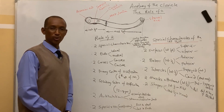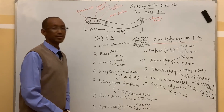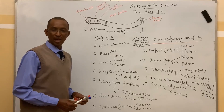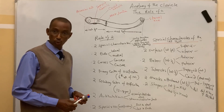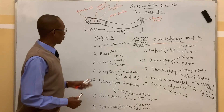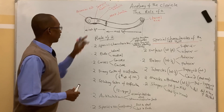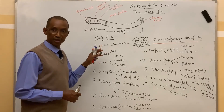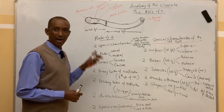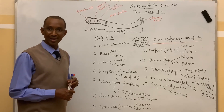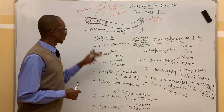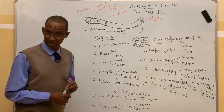Hello viewers, today I'm going to discuss the clavicle, which I call the rule of two. If you can remember my last video, I made the scapula the rule of three. Today the clavicle is the rule of two. The clavicle is also known as the collarbone, and together with the scapula it forms the shoulder girdle. The clavicle rule of two means it has two special characteristics.